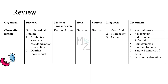Review summary: Clostridium difficile causes antibiotic-associated pseudomembranous colitis and nosocomial diarrhea. It is transmitted via the fecal-oral route, with humans as hosts and hospitals as the major source. Diagnosis involves gram staining, microscopy, culture (rarely), colonoscopy, blood work, ELISA, and PCR. Treatment includes metronidazole, vancomycin, fidaxomicin, rifaximin, bezlotoxumab, fluid replacement, surgical colectomy in severe cases, and fecal microbiota transplantation.